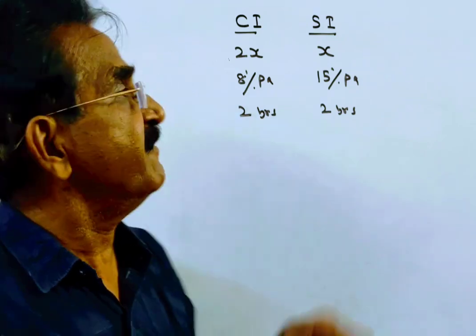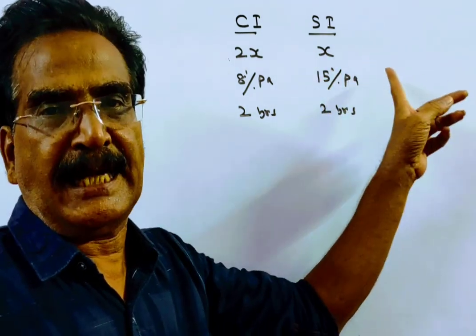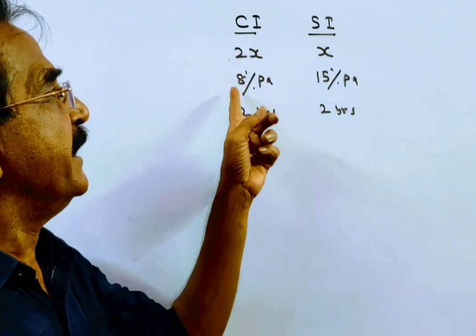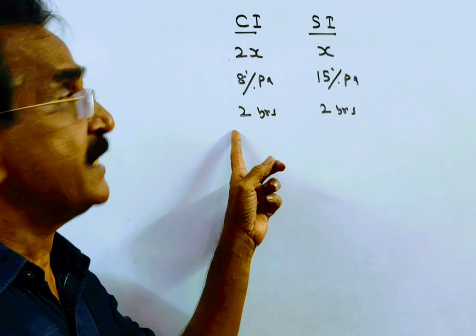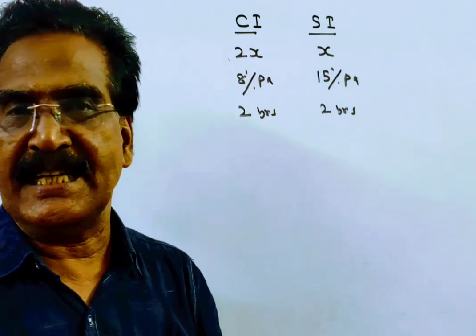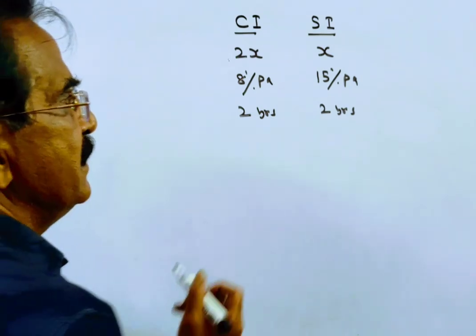A man has invested X rupees for 2 years at 15% per annum simple interest and 2X rupees at 8% per annum for 2 years compound interest. Now the difference between CI and SI is given, that is 820 rupees. What is X?